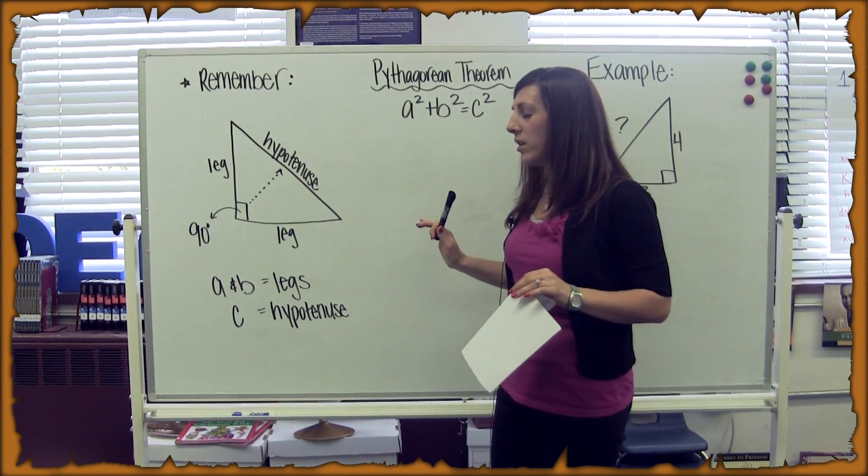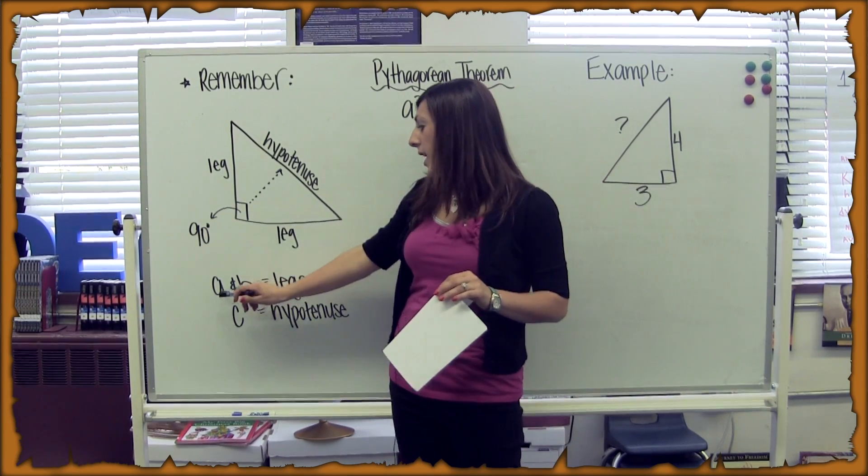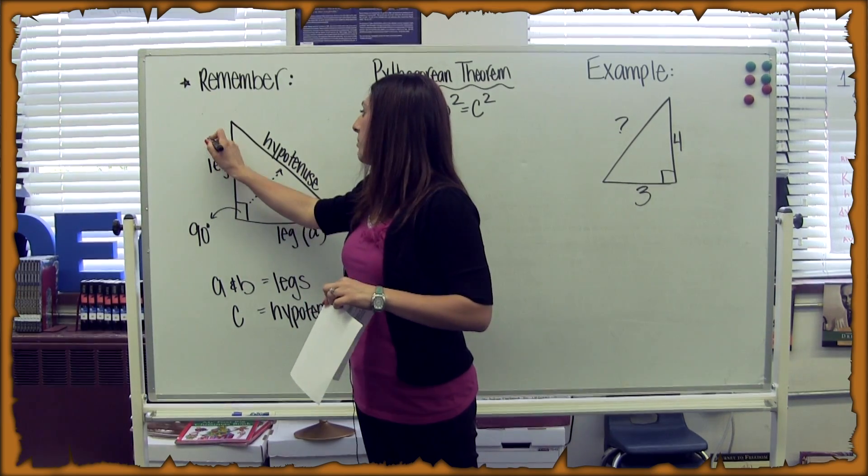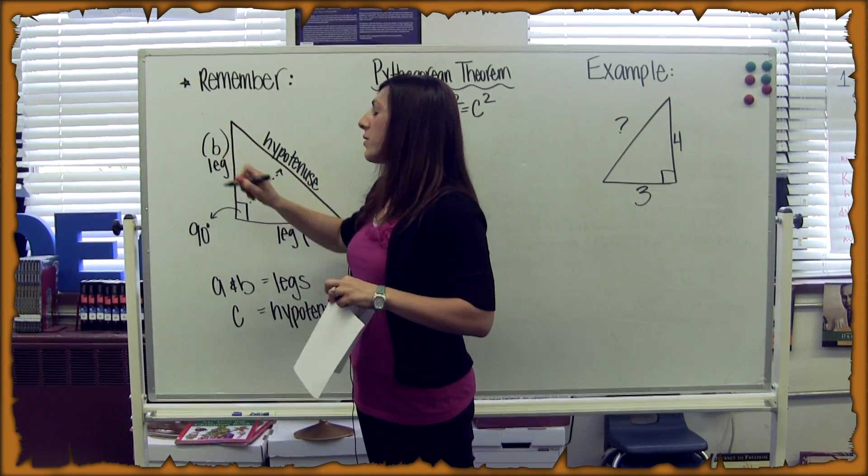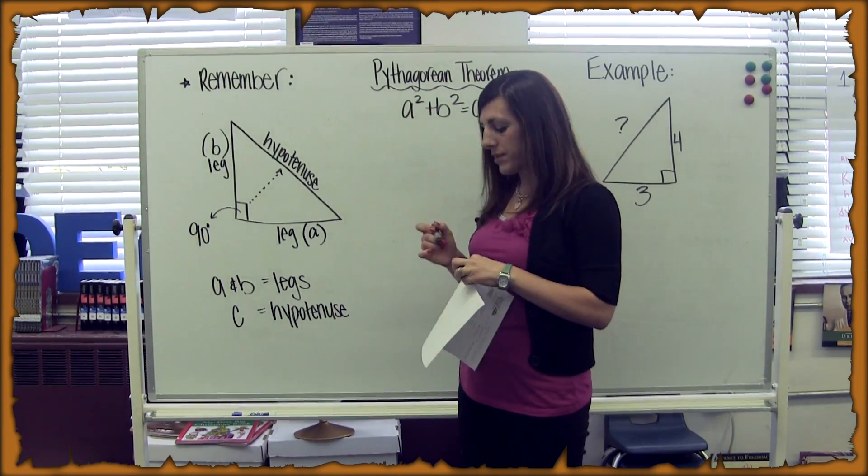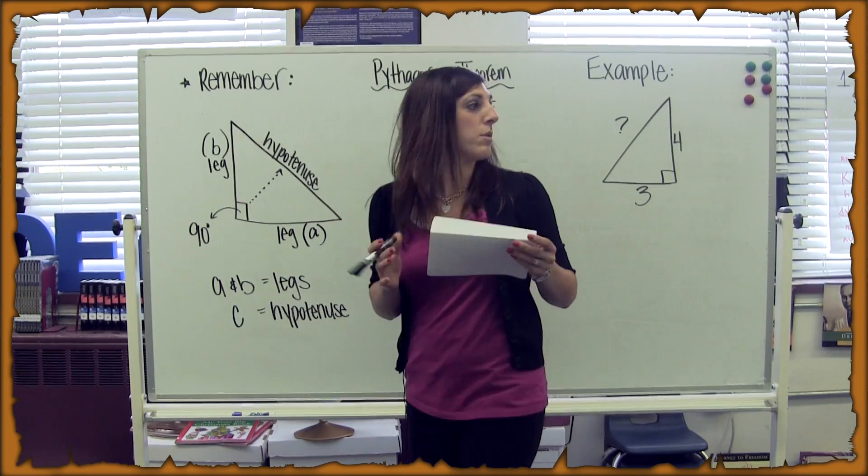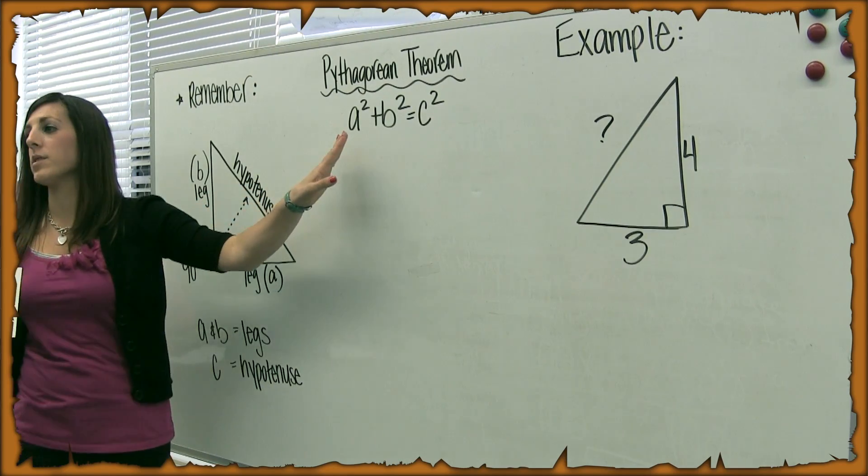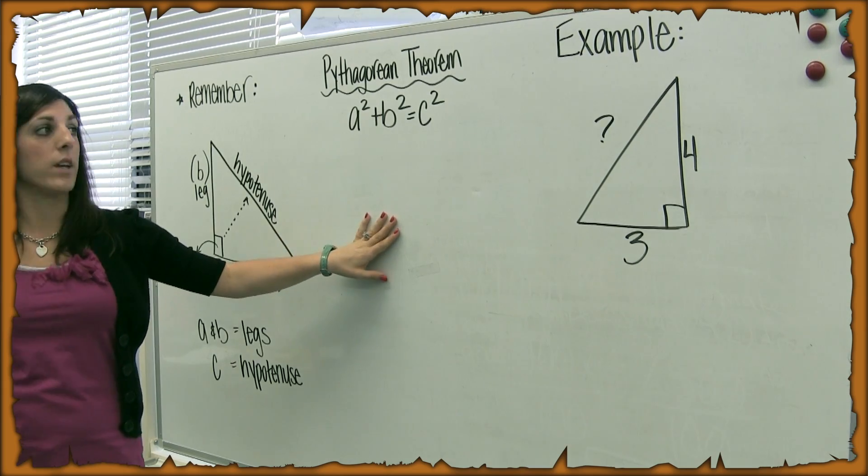In our Theorem, which we're going to use here in a minute, you need to remember that A and B are for each leg. So this is A, this is B. They can be used for either leg. It doesn't matter which one is A and which one is B. And the hypotenuse is always the letter C. So the Pythagorean Theorem is A squared plus B squared equals C squared. And remember, we only use this for a right triangle.